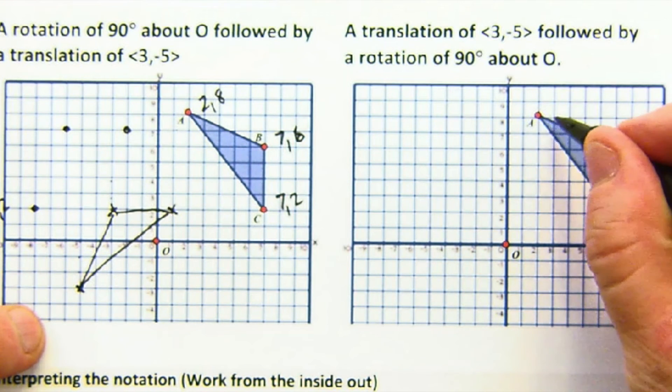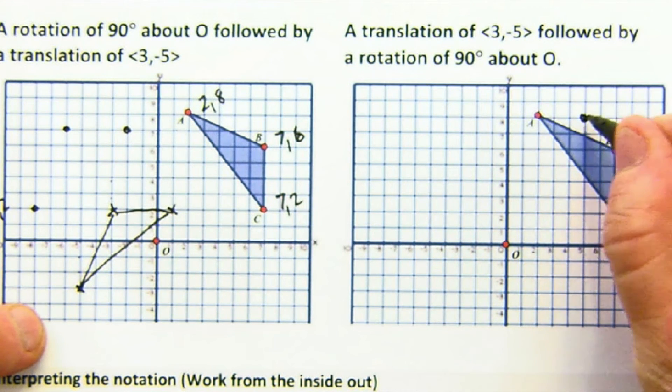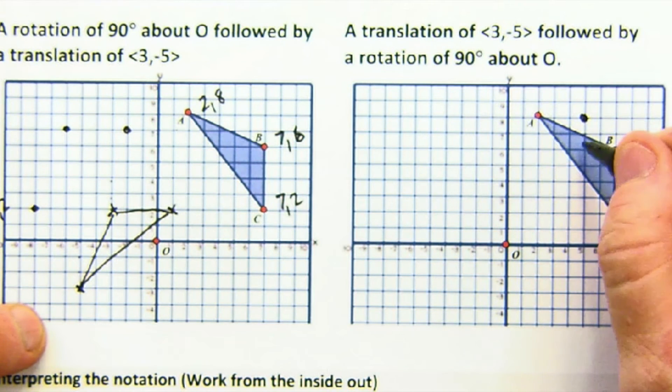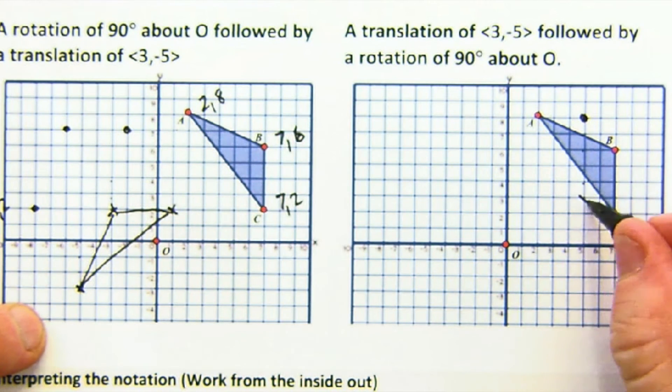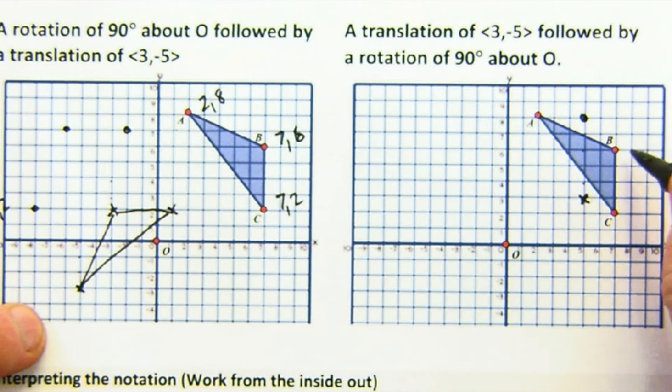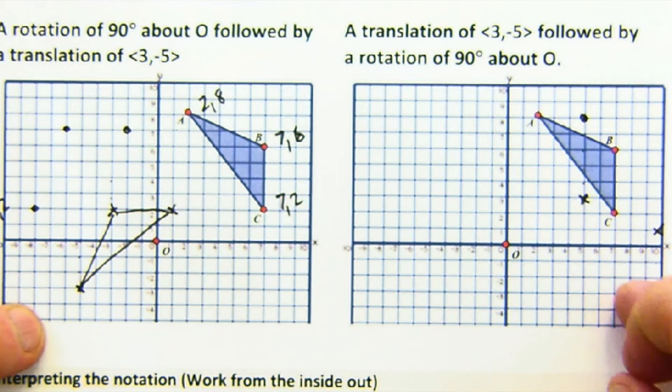If I do the translation first, 3 to the right and then 5 down, there's A prime. Now these locations when I rotate them 90 degrees now...